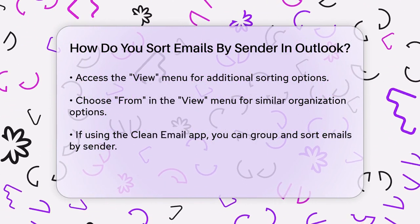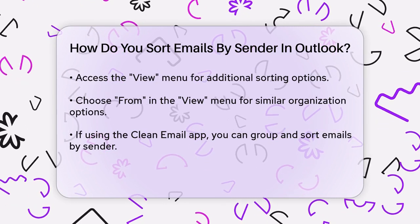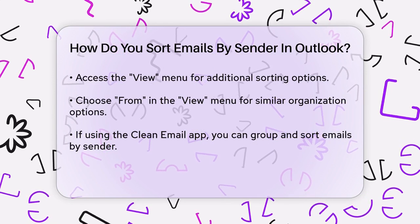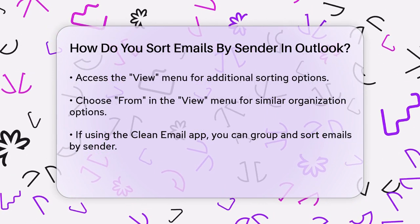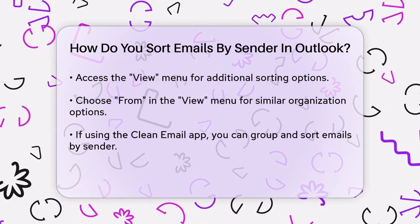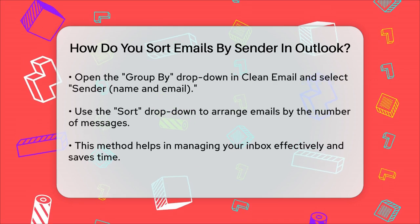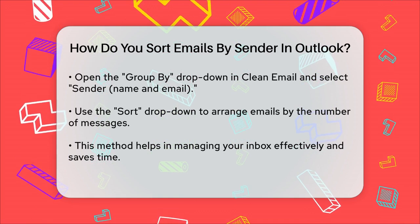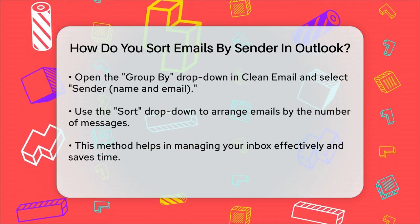In addition to these methods, if you're using the Clean Email app, you have even more flexibility. In Clean Email, you can group emails by sender and also sort them by the number of messages from each sender. To do this, open the Group By dropdown menu and choose Sender Name and Email, then use the Sort dropdown menu to select one of the Number of Messages options, such as High to Low or Low to High.